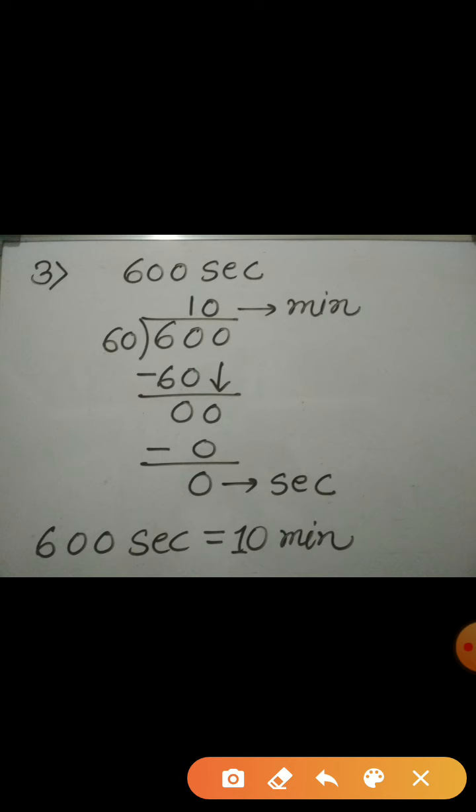Now, take one more example. Here, the time is given 600 seconds. Again, to convert 600 seconds into minutes, we need to divide 600 by 60.